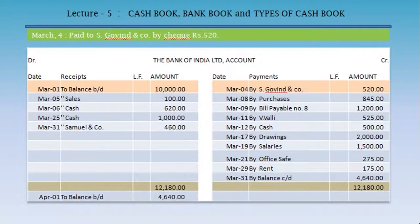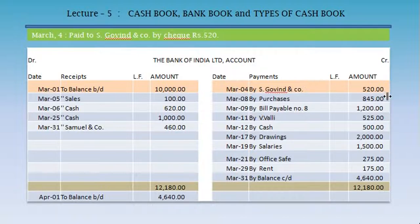Next transaction, March 4: paid S. Govind and Company by cheque Rs. 520. To record this transaction in the Bank of India account — as it is a payment, we record it on the credit side — date March 4, by S. Govind and Company, Rs. 520.